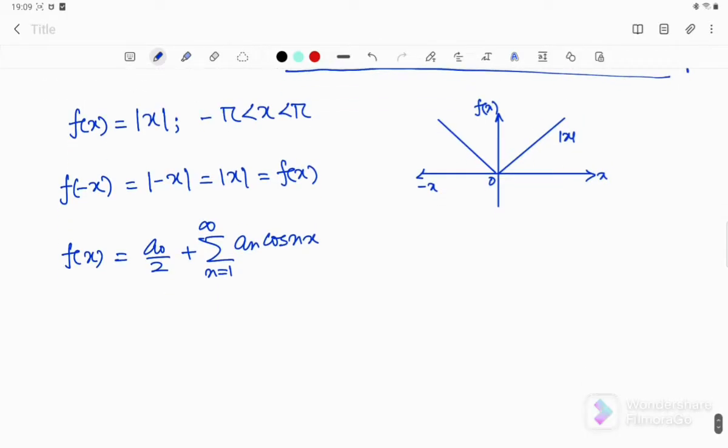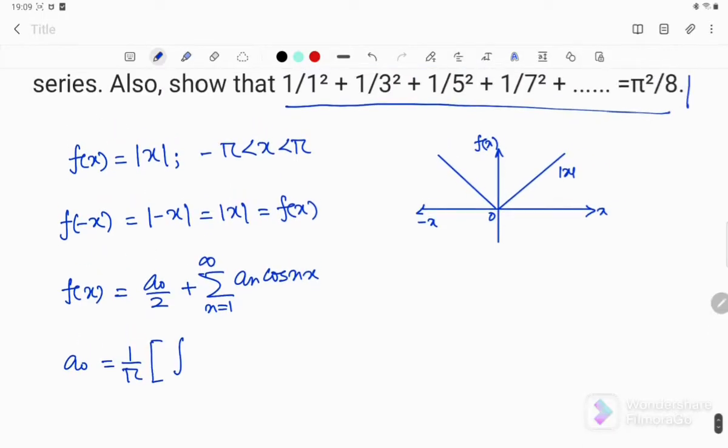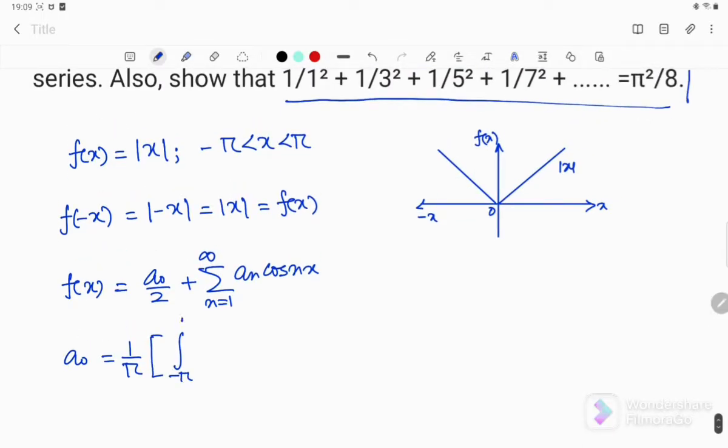So now let's calculate, let's find a0 here. So I can write it like this: minus pi to 0 minus x dx plus 0 to pi x dx.